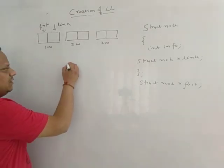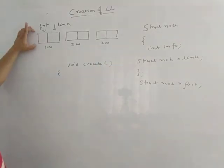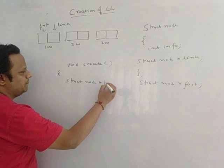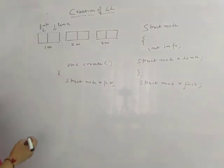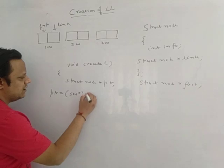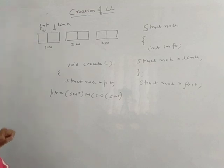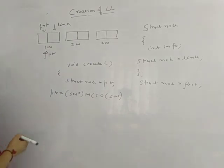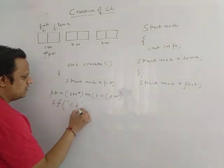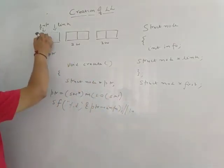Let's write the function — void create. First, I need a pointer, so I write struct node star ptr. Then I allocate memory to this ptr: ptr = (struct node*) malloc(sizeof(struct node)). Once this is written, the node gets created and its address is assigned to ptr. Now I insert the info part using scanf("%d", &ptr->info). Let's suppose the value 10 gets inserted.